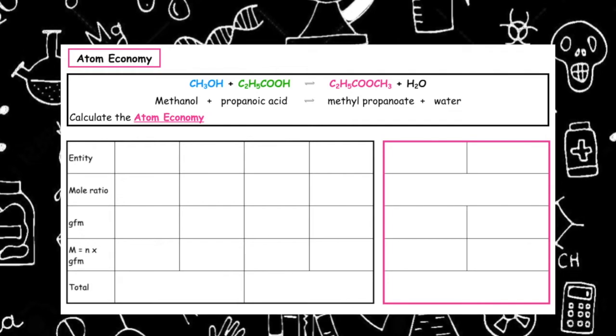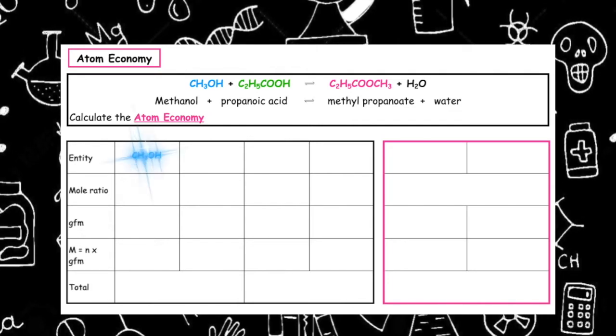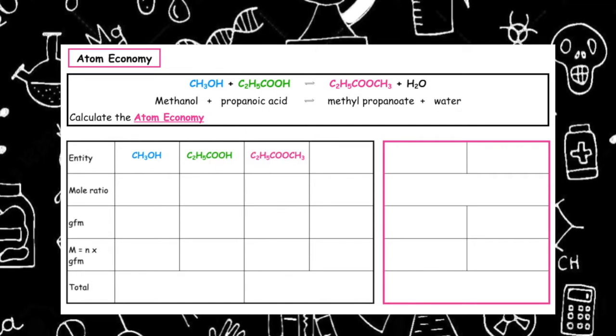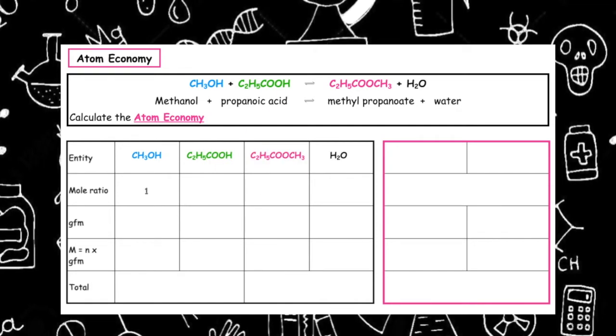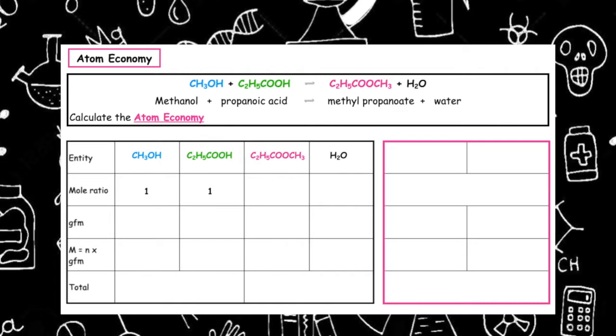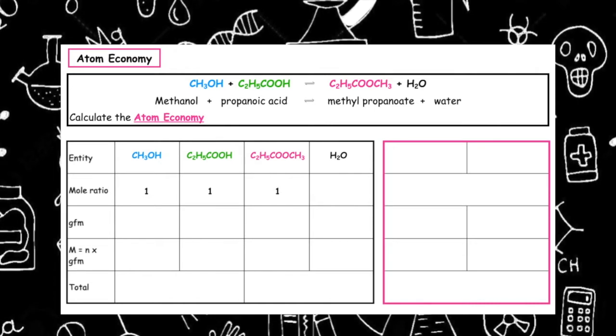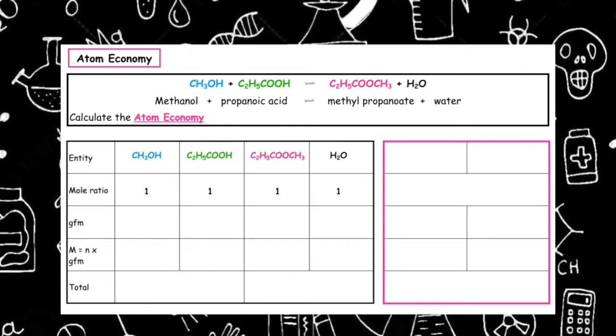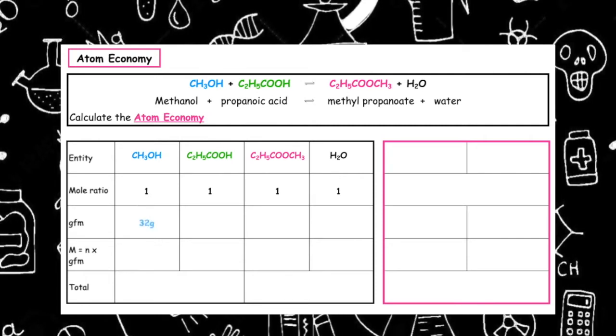To do this, we're going to take each of the entities and write down their formula. We're then going to do the mole ratio from the balanced chemical equation, and the ratio is a one to one to one to one ratio.